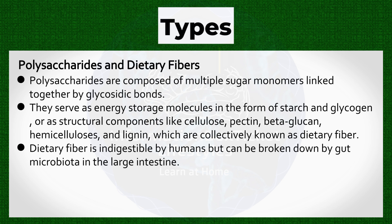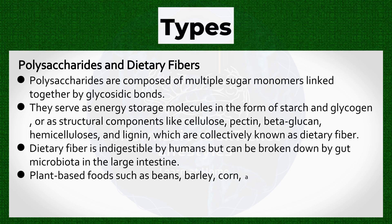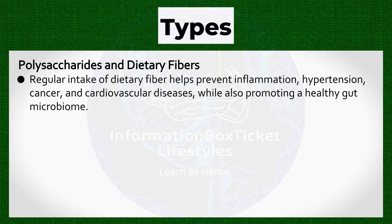Plant-based foods such as beans, barley, corn, and oats are rich sources of dietary fiber. Regular intake of dietary fiber helps prevent inflammation, hypertension, cancer, and cardiovascular diseases, while also promoting a healthy gut microbiome.